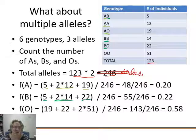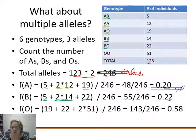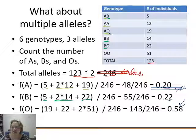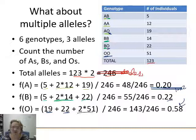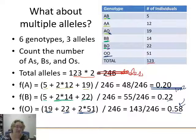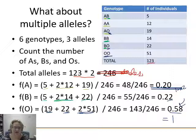For the O allele: we could just do 1 minus the sum of the others — 1 − 0.42 = 0.58 — but let's verify. From AO: 19 O alleles; from BO: 22 O alleles; from OO: 51 × 2 = 102 alleles. Total: 143 divided by 246 = 0.58. All three allele frequencies add up to one.